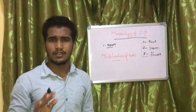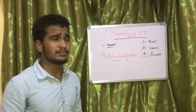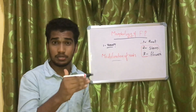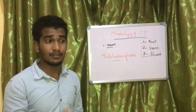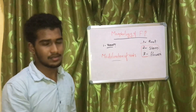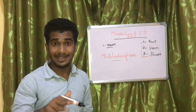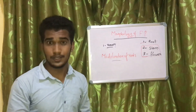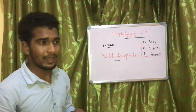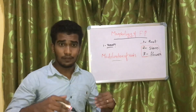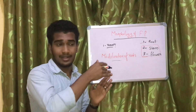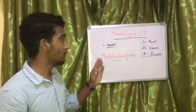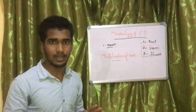The primary functions of roots are to absorb nutrients, minerals, and water from the soil. The second function is anchorage of plants in the soil. If roots perform functions other than these two, that is called a modification of roots.